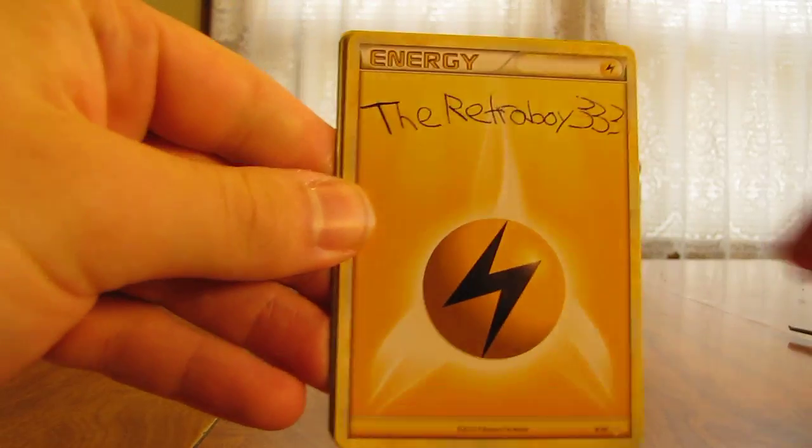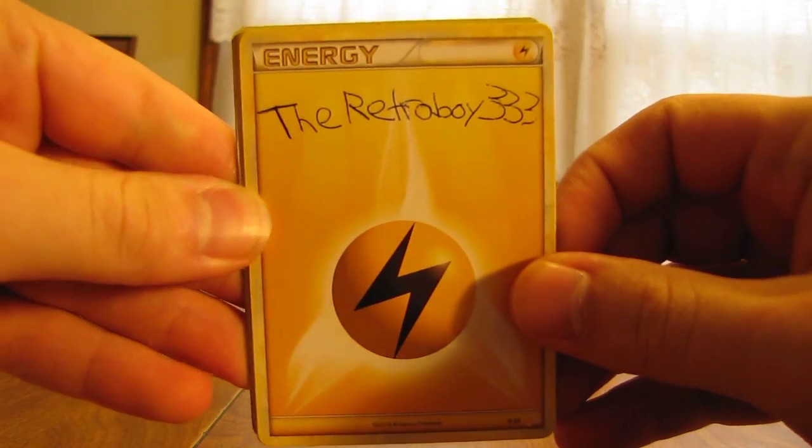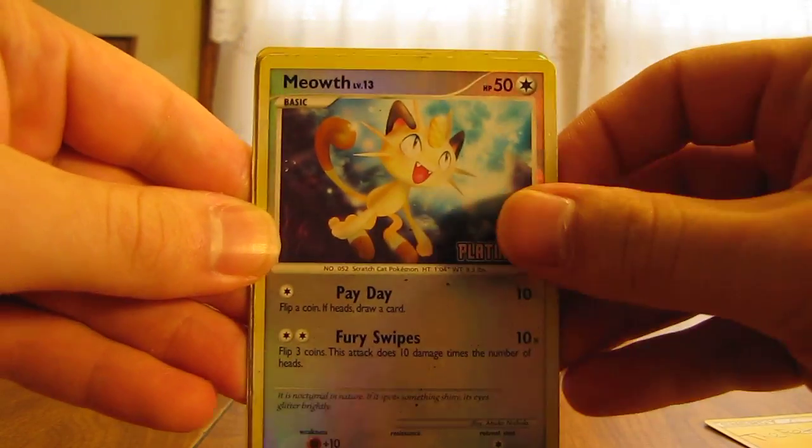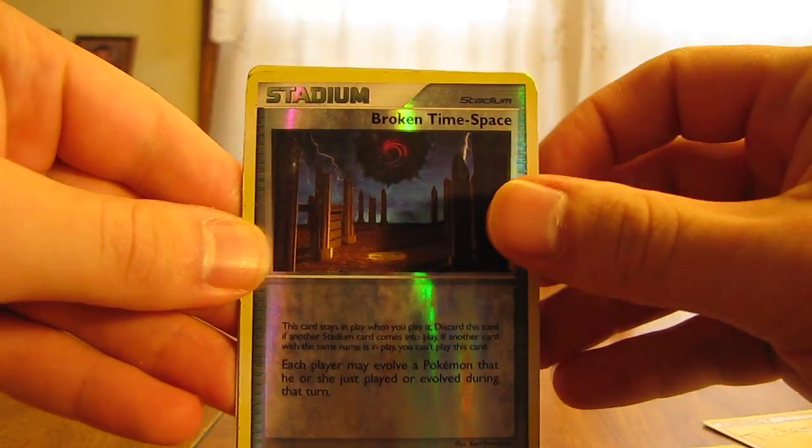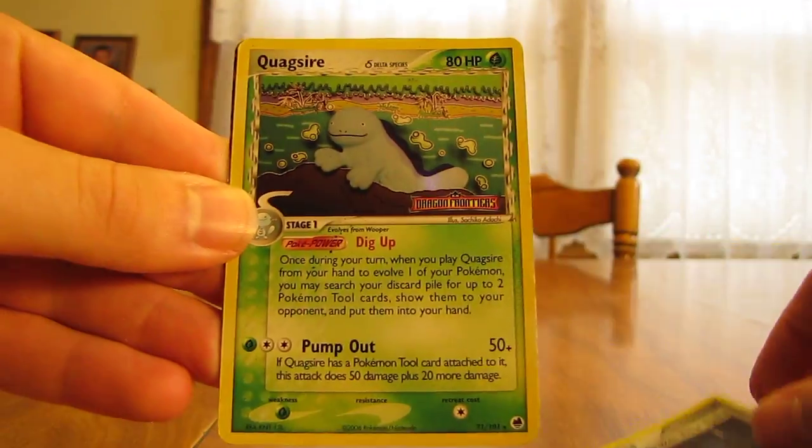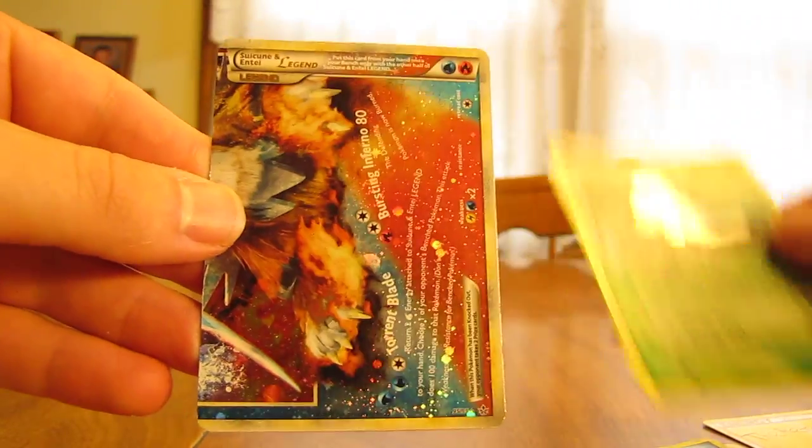So here's a signature card. TheRetroBoy333. We have a Meowth Reverse, Broken Time-Space Reverse, Quagsire Reverse, and we have a Suicune and Ente Legend Bottom.